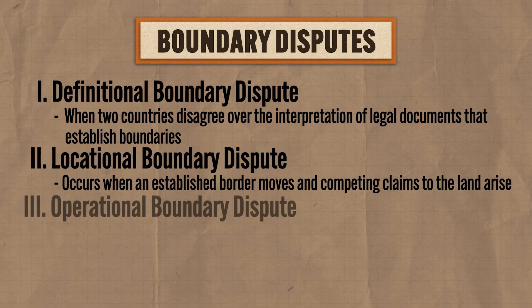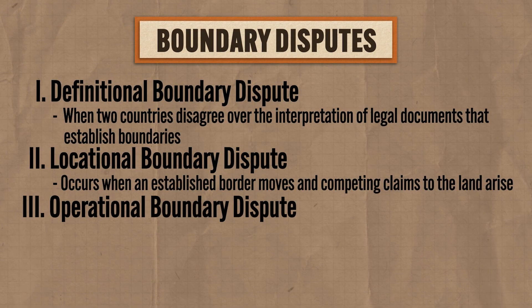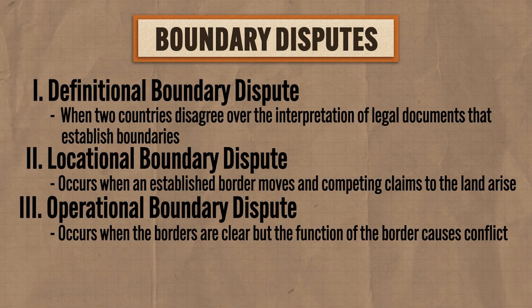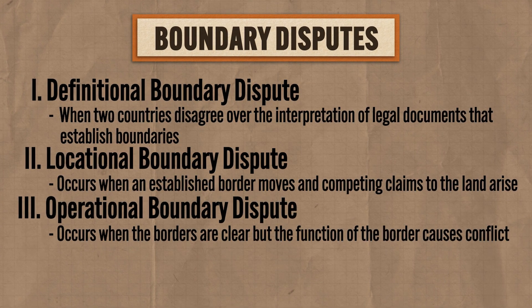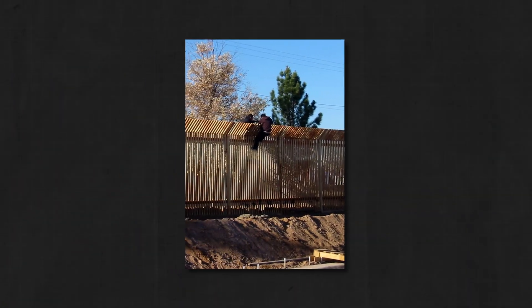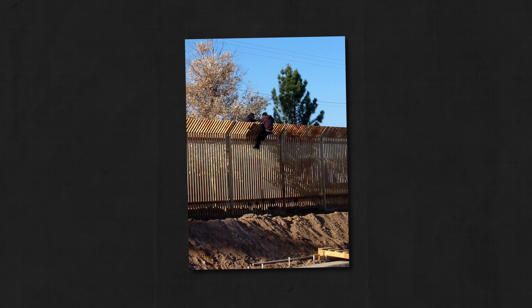Third is an operational boundary dispute, which occurs when the borders are clear but the function of the border causes conflict. Again, back to the U.S.-Mexico border — a big point of contention between these two states is the flow of undocumented immigrants into the U.S. from Mexico. Both states agree that they share responsibility for addressing the problem, but when it comes to who's going to pay for fixing the problem, that can get nasty.